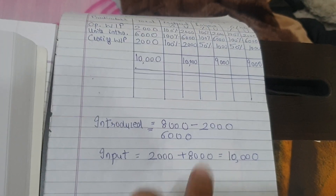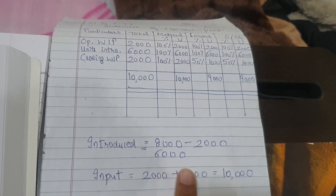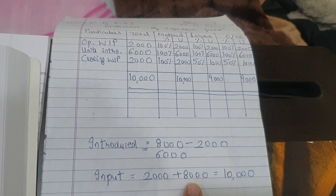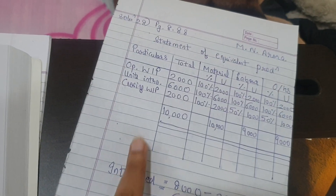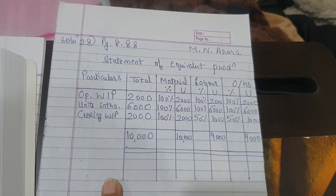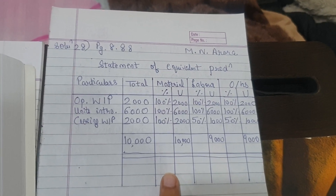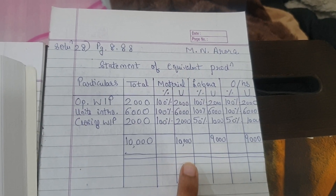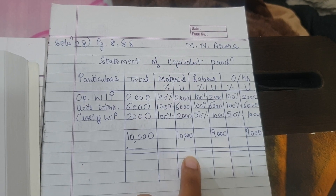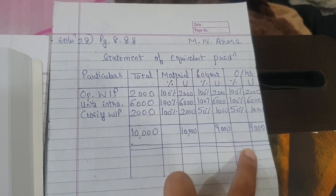Input was: 2,000 opening WIP plus 8,000 introduced, so total input was 10,000. There is no abnormal gain or abnormal loss because there is no difference between output and input. So the total equivalent units of material is 10,000, labor is 9,000, and overheads is 9,000.